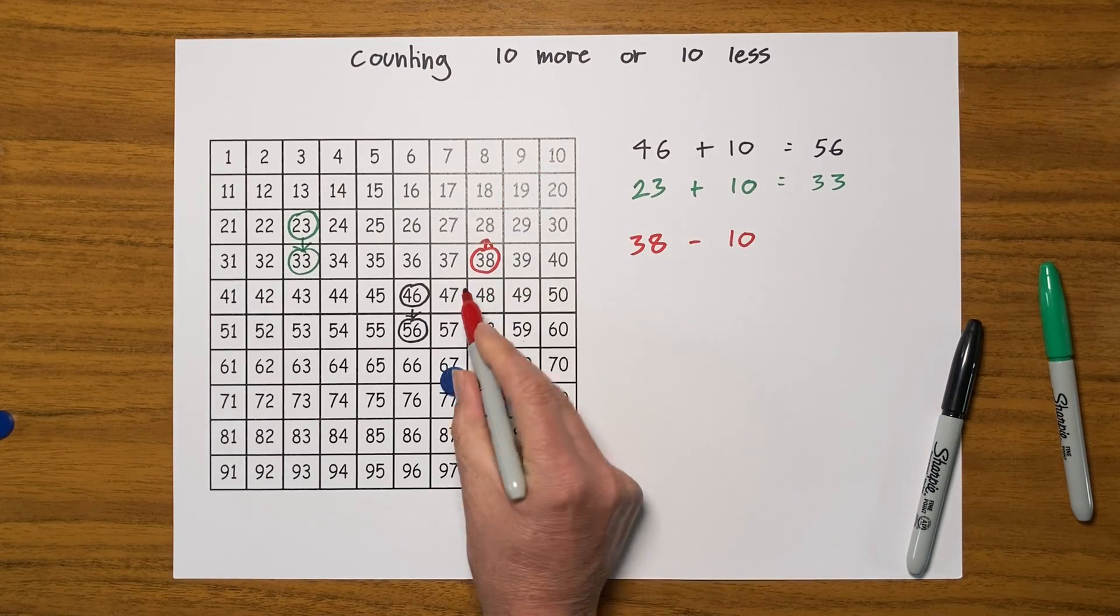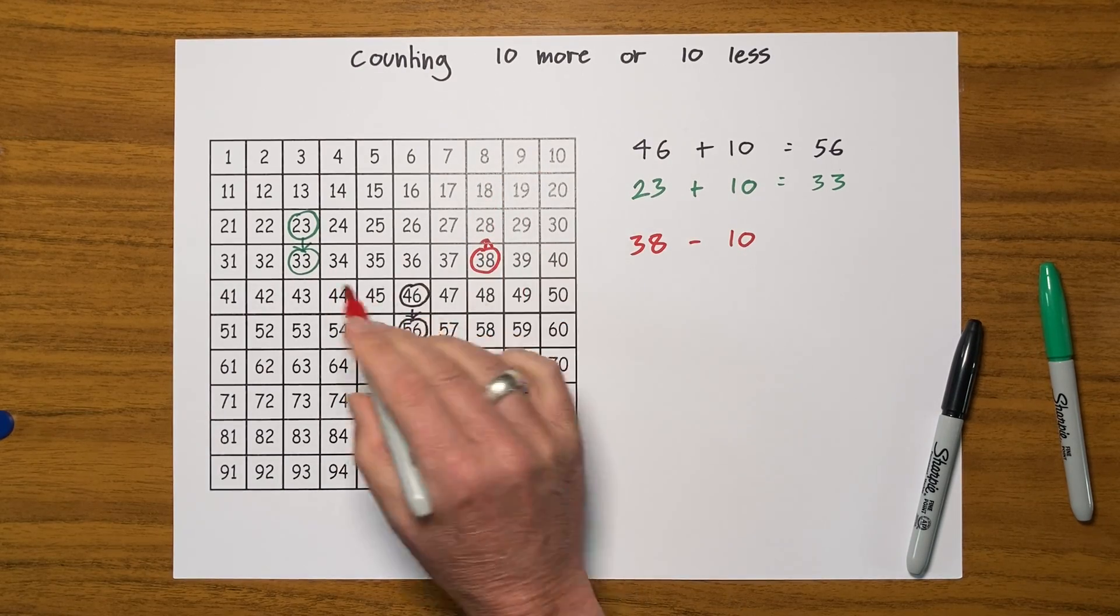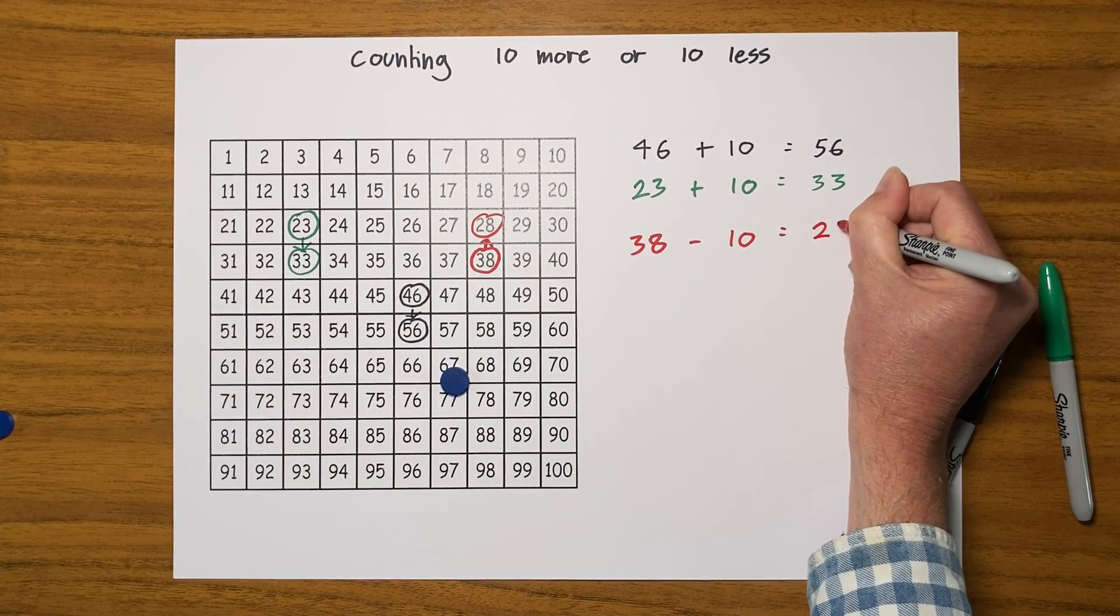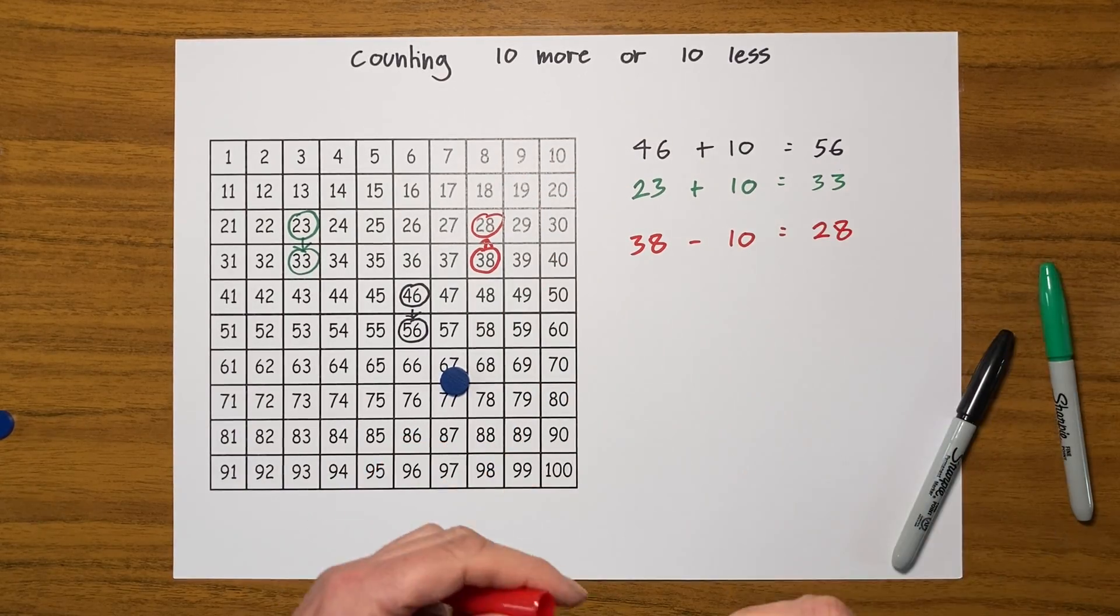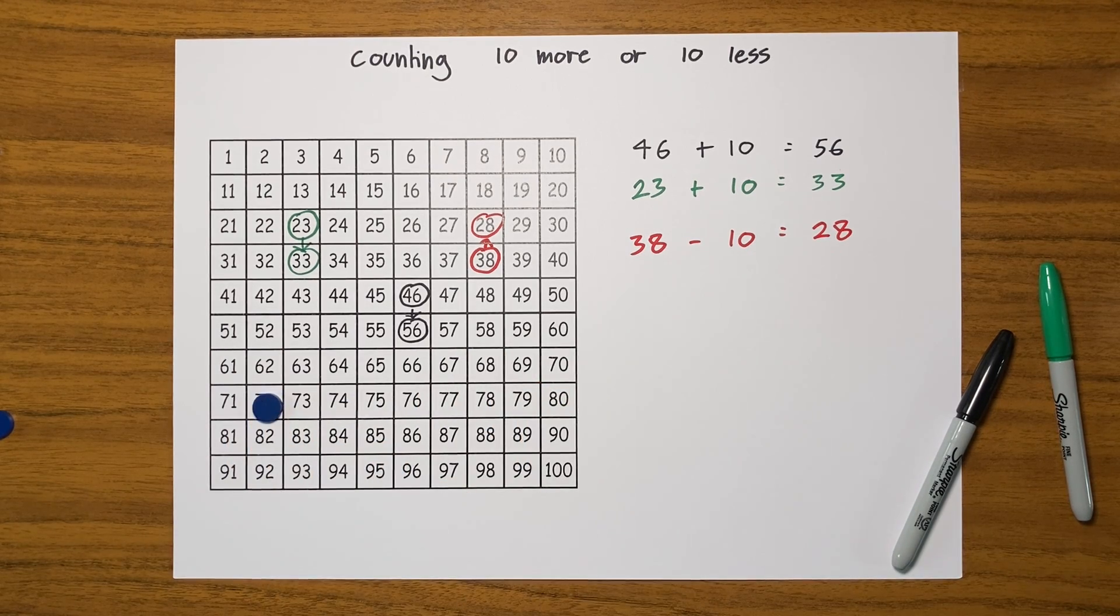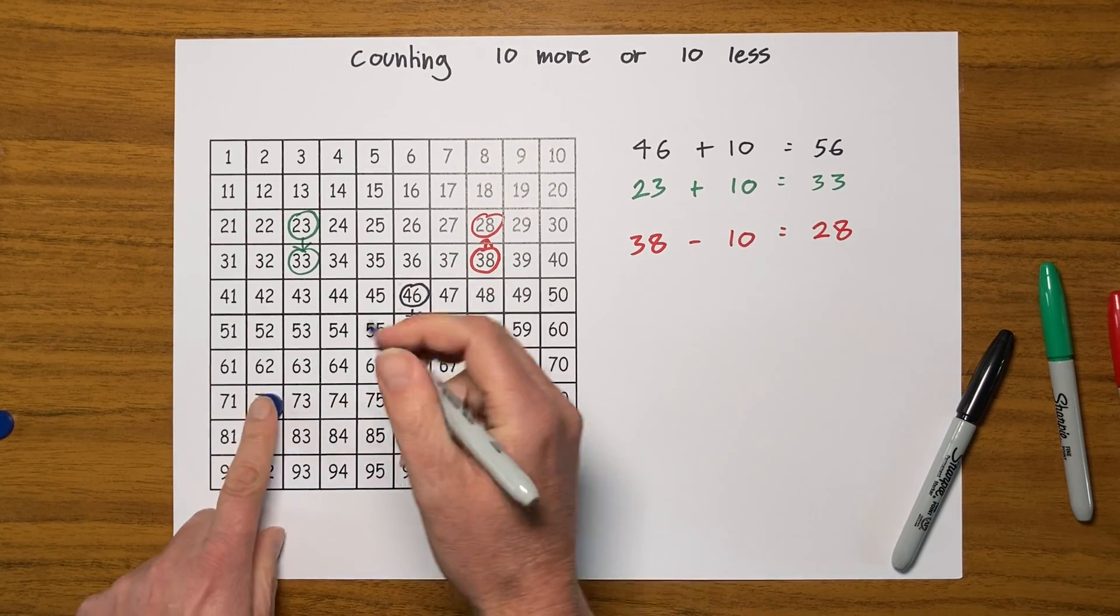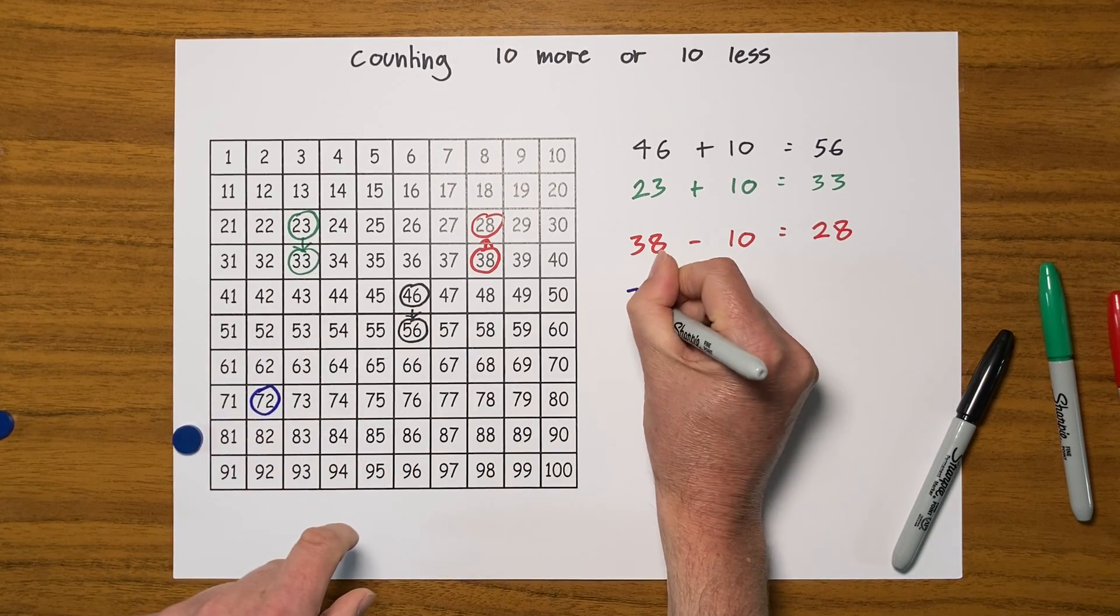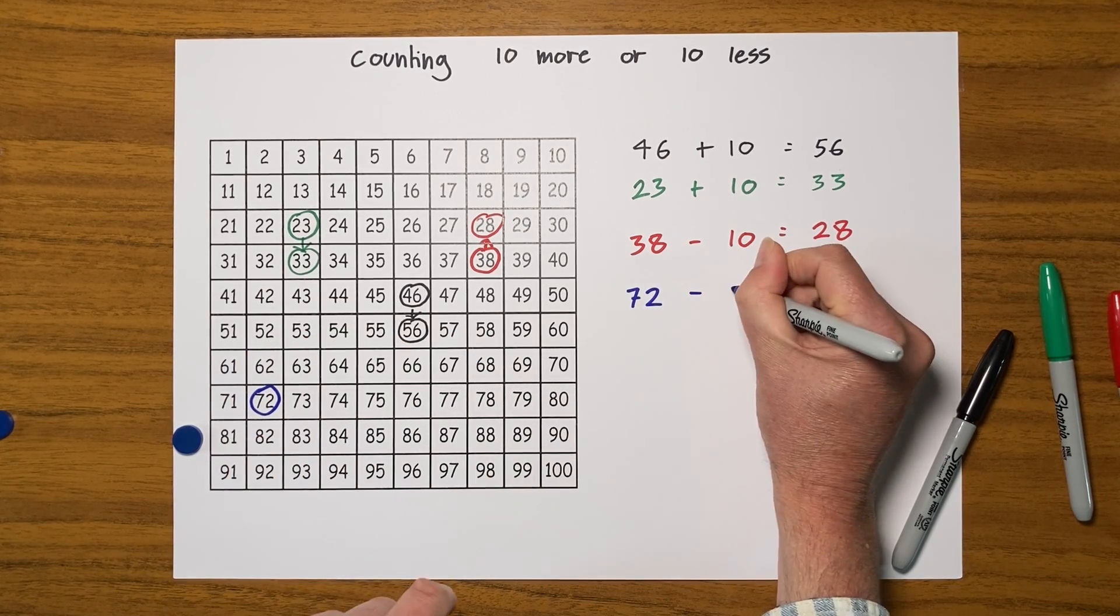Or I can just move up, just go upwards on the hundred square here to give me 28. Let's do one more. There we go, I've got to 72, let's make that a blue one.